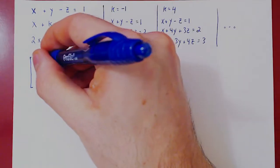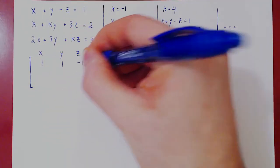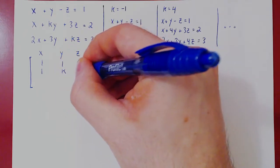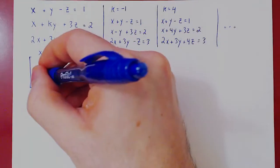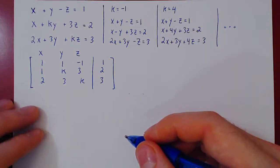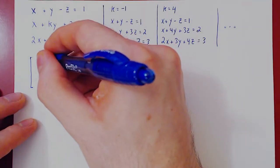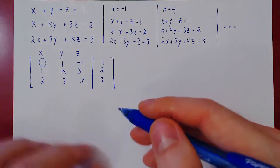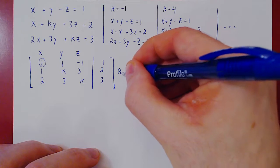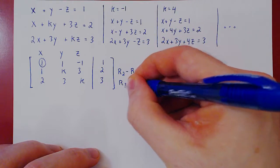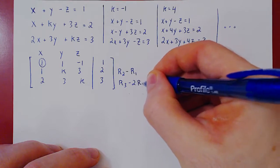Keep in mind that we don't really want to find the solutions. We simply want to count them. So it's enough to find what we will call potential leading ones. Values that we could turn, if we wanted to, into a leading one. Just so we can figure out if a variable is leading or free. So the first row, one, one, negative one, one. Second row, one, k, three, two. Third row, two, three, k, three. Alright, we already have a leading one in the top row. Let's use it to kill the two entries below it. So let's do row two minus row one, and row three minus two row one.